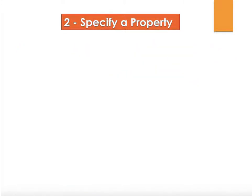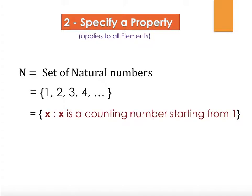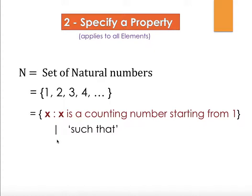The second way to write a set is by specifying the property. This property has to apply to all elements of the set. Let's look at set N, the set of natural numbers — 1, 2, 3, 4 and so on. We define a variable x and say x is a counting number starting from 1. The colon here is called 'such that,' so x is such that x is a counting number. Some people use a vertical line instead of a colon — you can do either one.